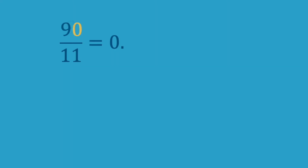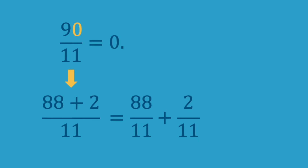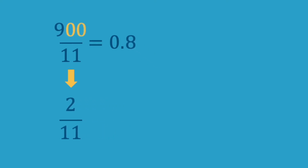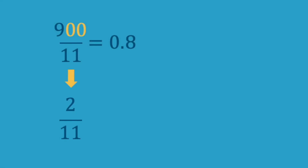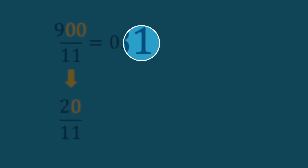So starting with 0., I'm giving the numerator a 10, so it's no longer 9 over 11 — it's actually 90 over 11. And 11 goes into 90 eight times, so I take that 8 and stick it into my decimal answer: 0.8. But there's a remainder — 11 times 8 is 88, so I have a remainder of 2. We have 0.8 and remaining 2 over 11. I give that a factor of 10: 20 over 11. 11 goes into 20 once, so I put 1 into my decimal: 0.81.